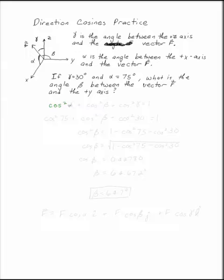Cosine squared alpha plus cosine squared beta plus cosine squared gamma equals 1. In this case gamma is 30, cosine squared of 30. Alpha is 75, cosine squared of 75.